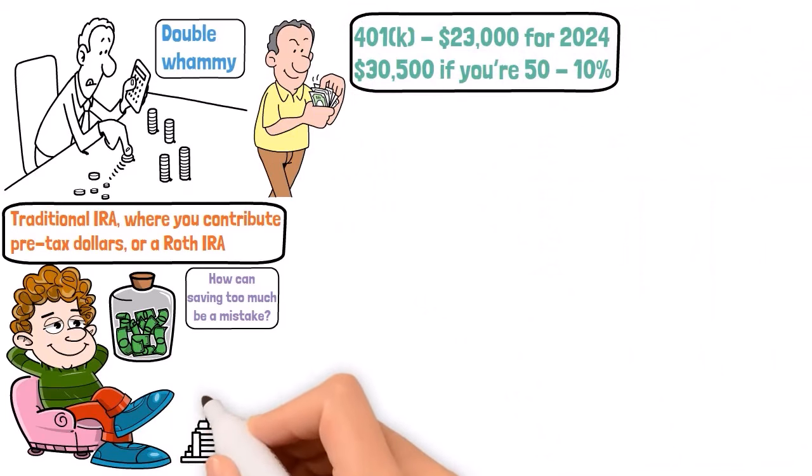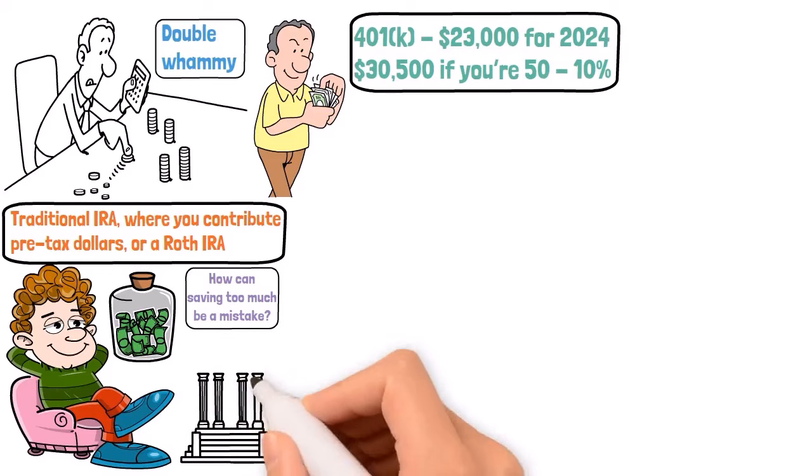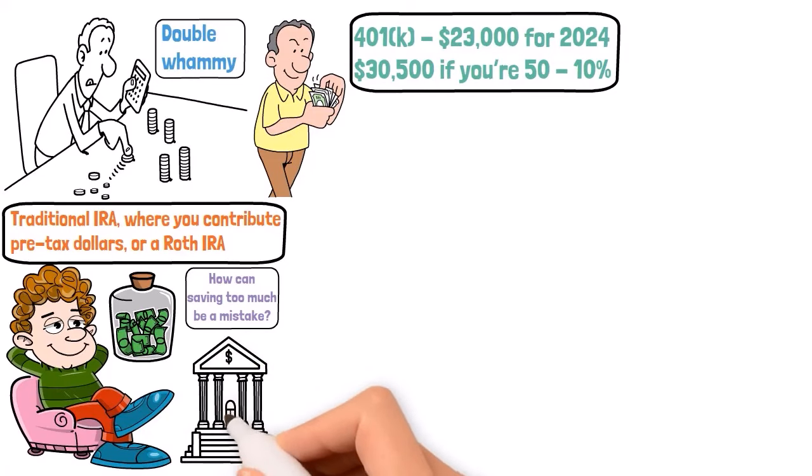If you're nearing these limits, it might be time to diversify. That's right, spread your investments to avoid tax headaches and penalties. Think IRAs, real estate, or even a taxable brokerage account.